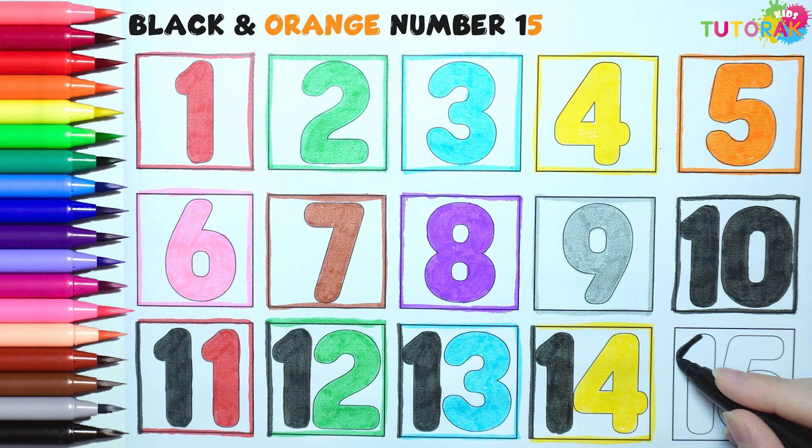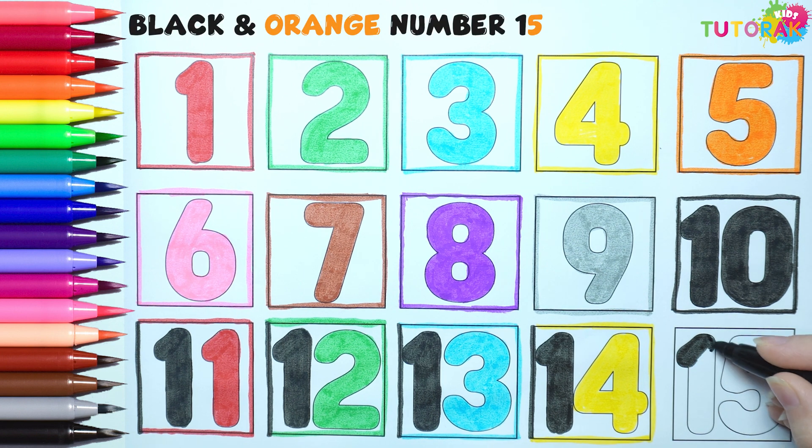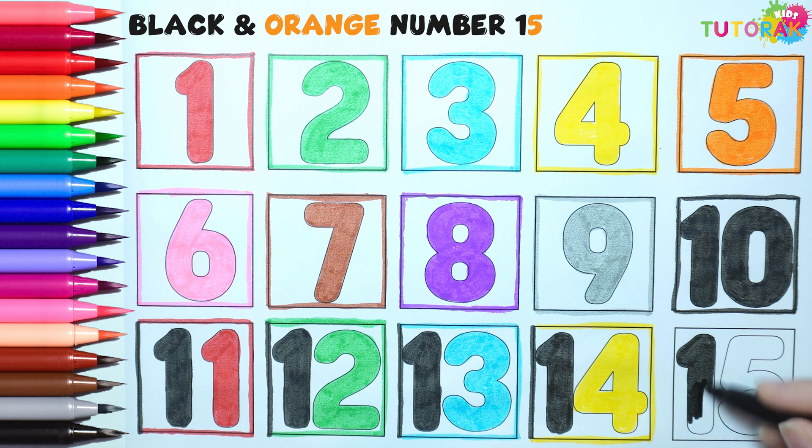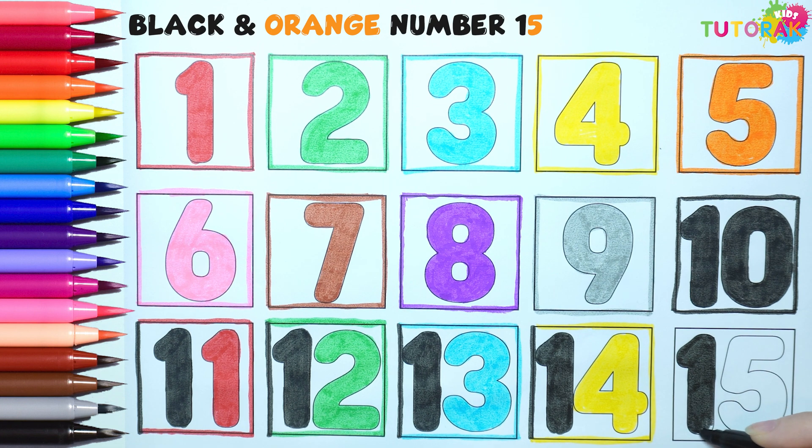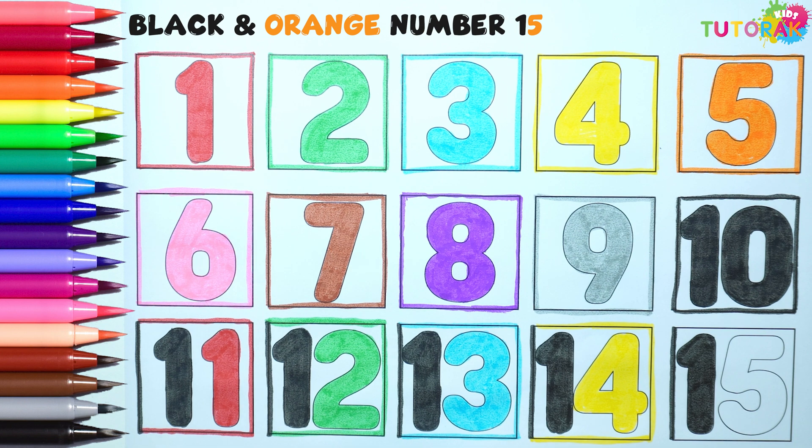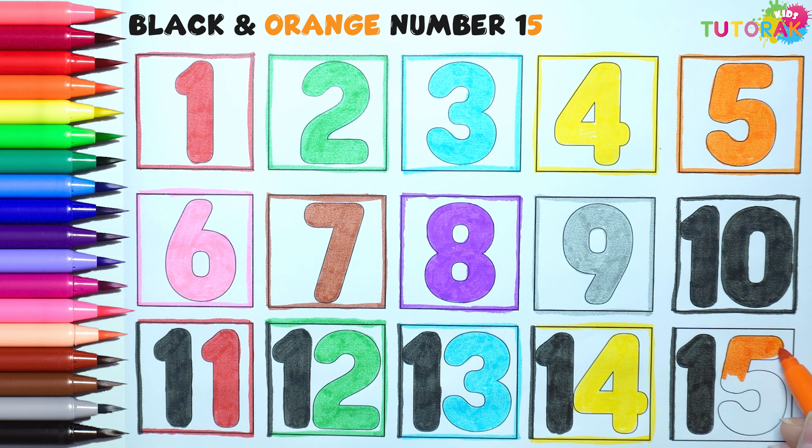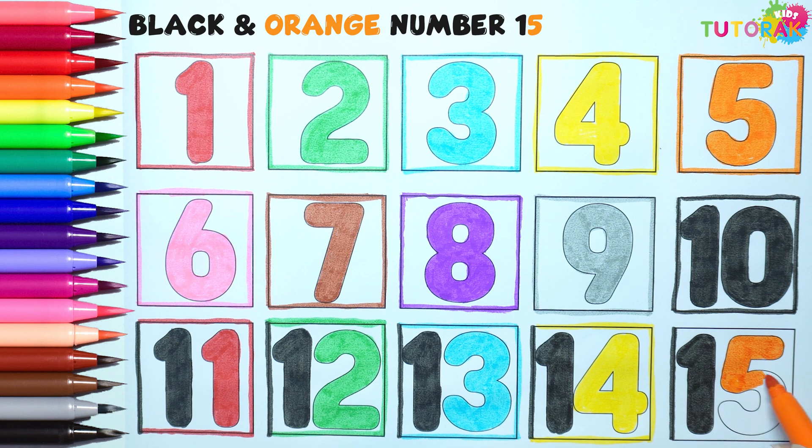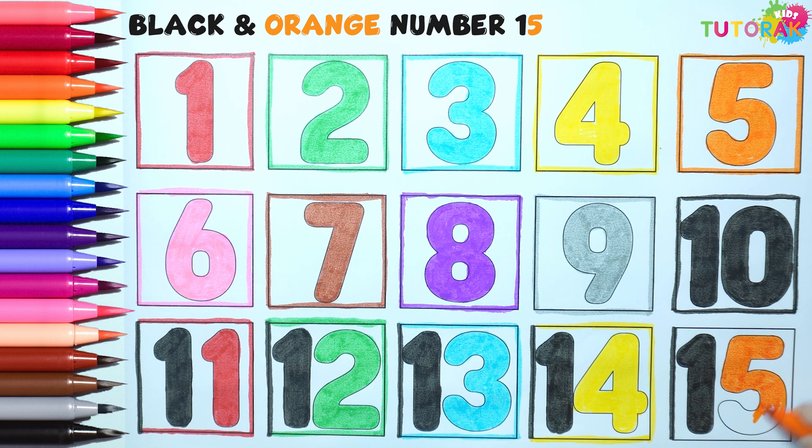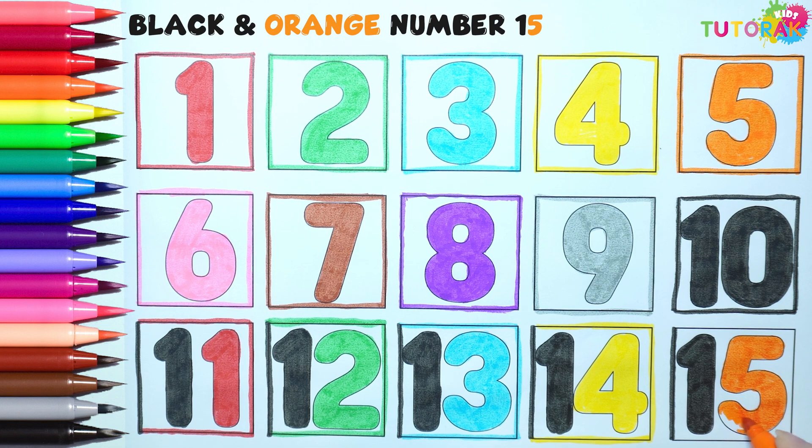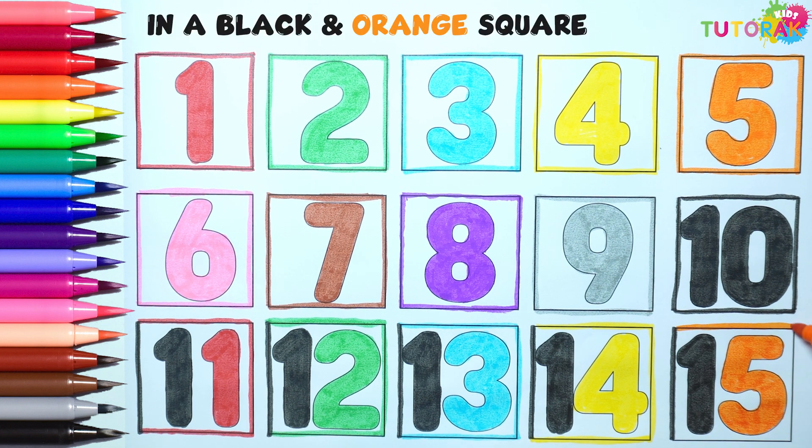The last number, 10 plus 5 make 15. That's black and orange 15 in a black and orange square.